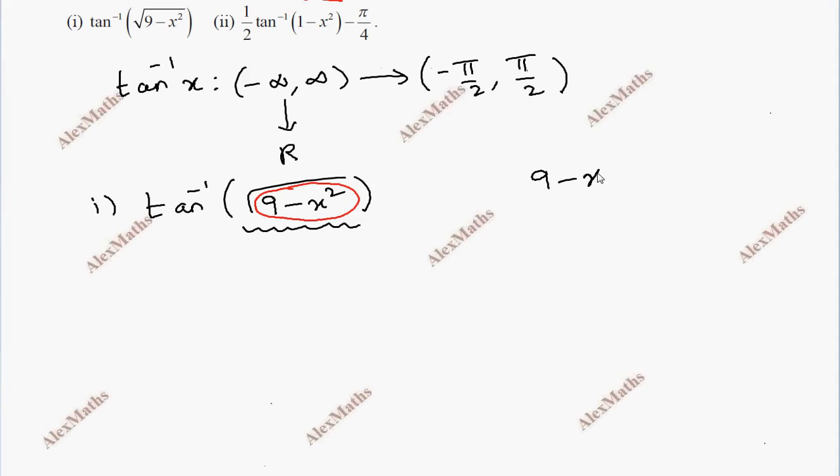So 9 minus x square is equal to 0. Then 9 is equal to x square, so x value is plus or minus 3.